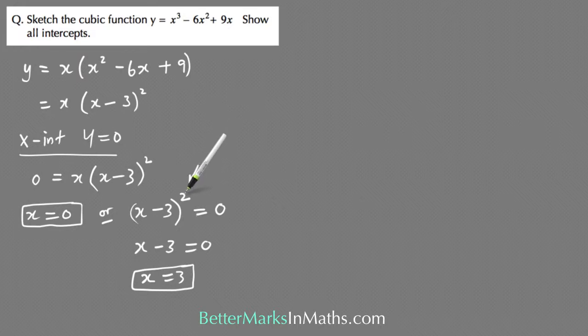Because this is a repeated factor, x minus 3 times by x minus 3, that means that this x value is where the graph actually touches rather than goes through at that value. So the graph intersects at x equals 0 and touches at x equals 3.